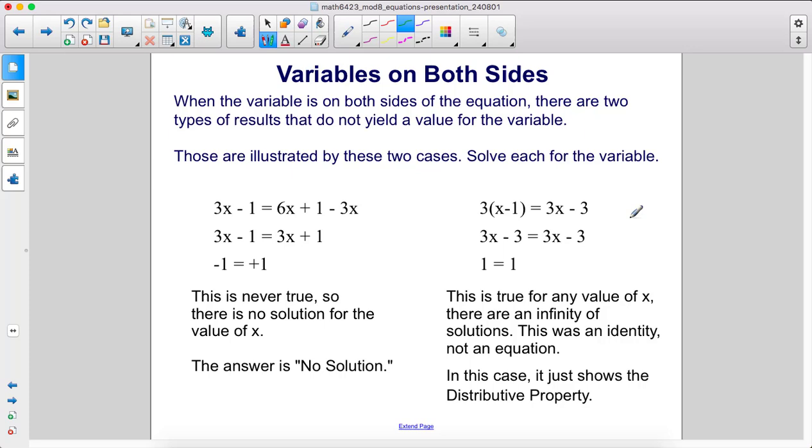When the variable's on both sides of the equation, there are two types of results that do not yield a value for the variable. Those are illustrated by these two cases. Solve each for the variable.